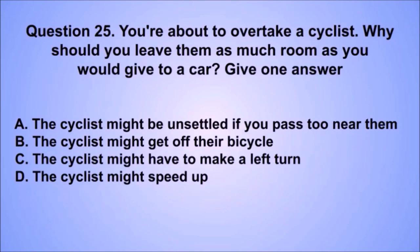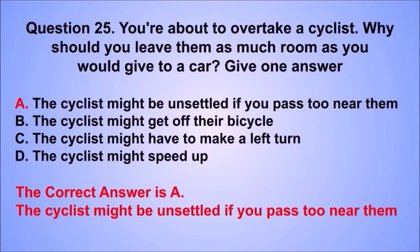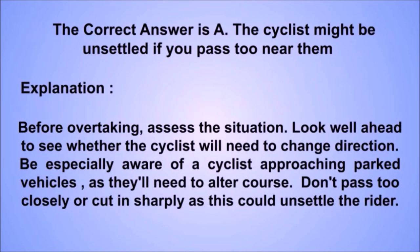Question 25. You're about to overtake a cyclist. Why should you leave them as much room as you would give to a car? The correct answer is A: The cyclist might be unsettled if you pass too near them. Before overtaking, assess the situation. Look well ahead to see whether the cyclist will need to change direction. Don't pass too closely or cut in sharply as this could unsettle the rider.